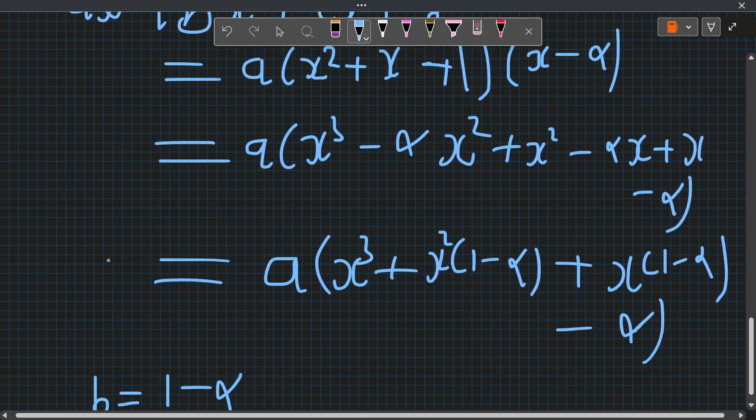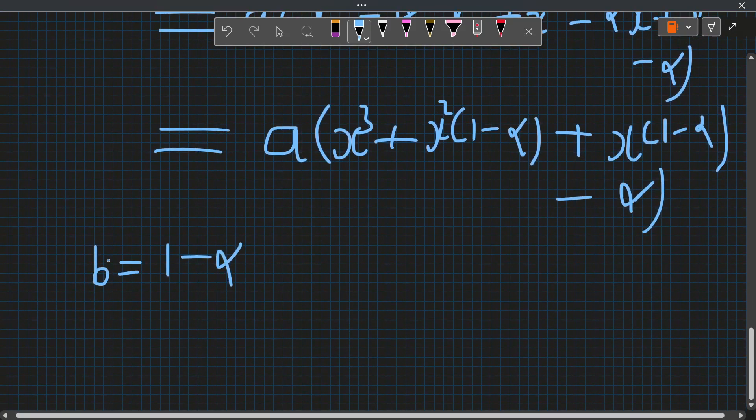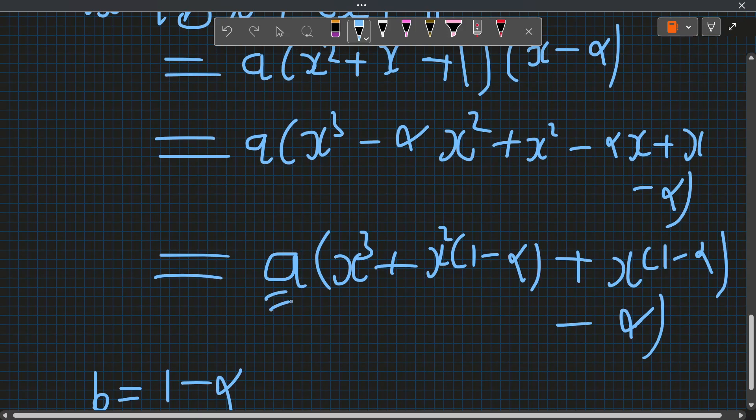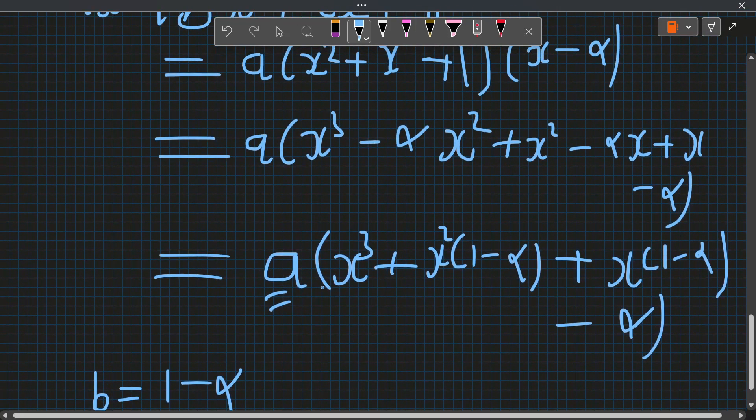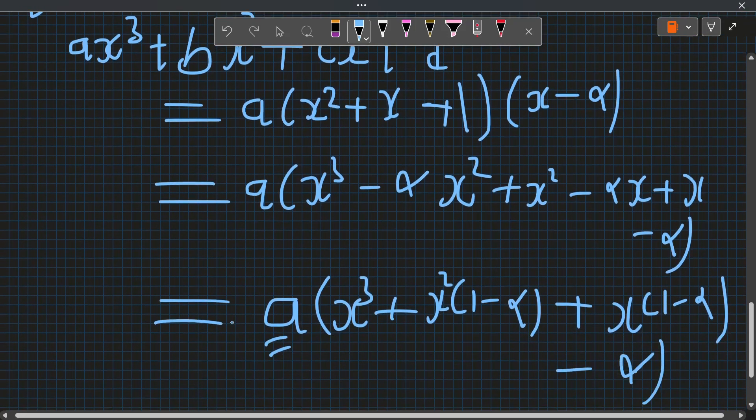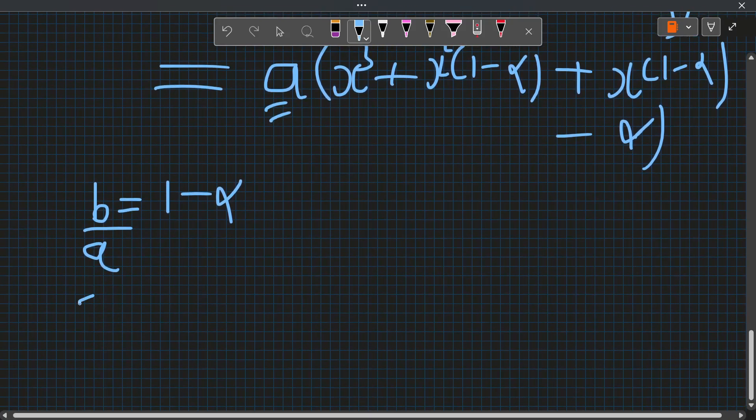We will get c equal to 1 - α. Sorry, we will get b/a is equal to 1 - α, because we have an a in multiplication here. So b/a is 1 - α. We will have c/a equal to 1 - α.